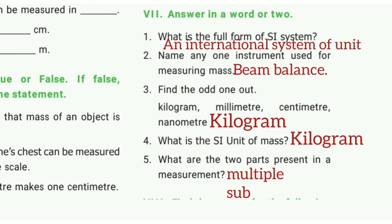Answer in brief. First one: What is the full form of the SI system? The answer is International System of Units. Second one: Name any one instrument used for measuring mass. The answer is beam balance.